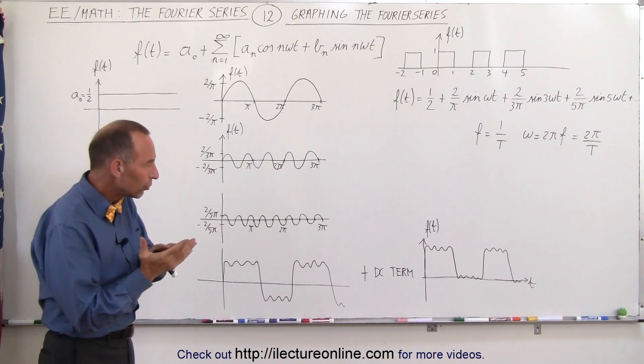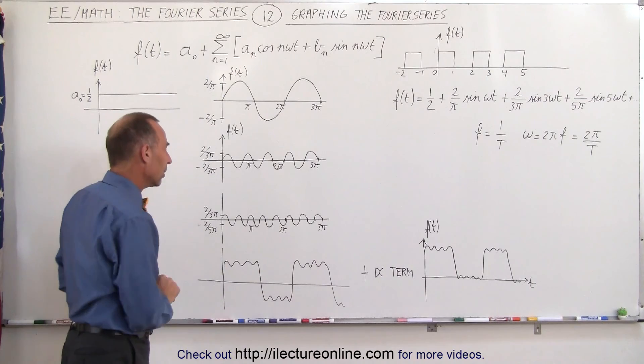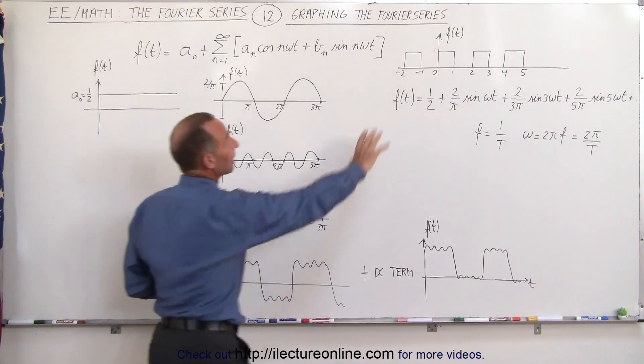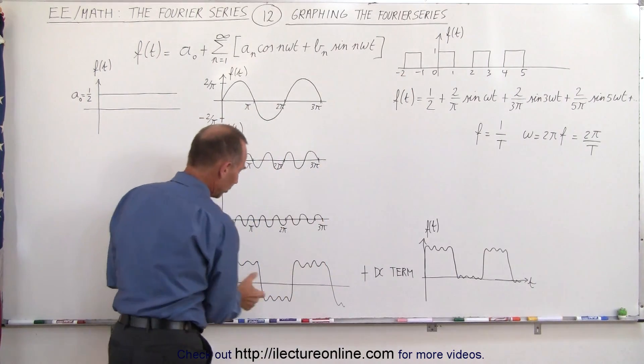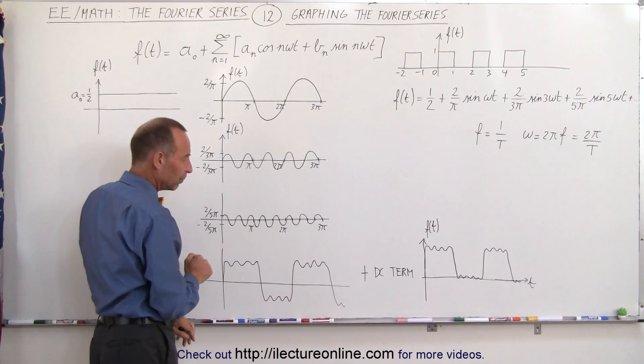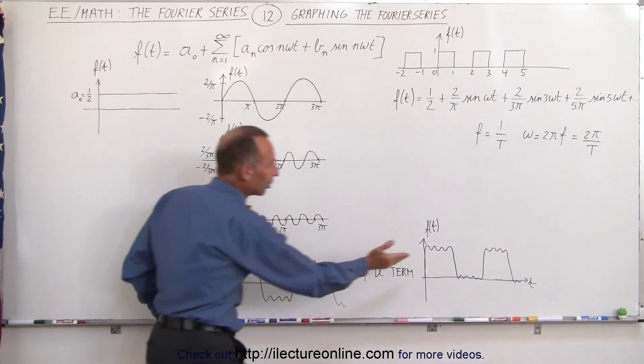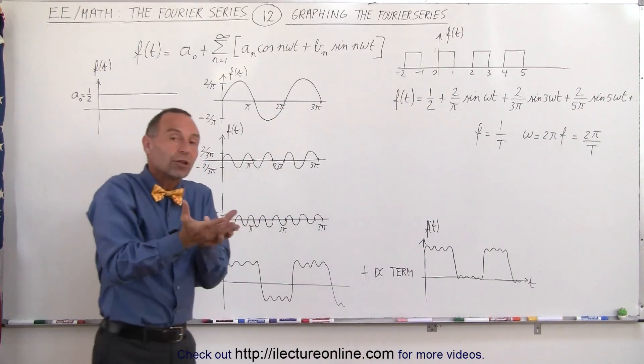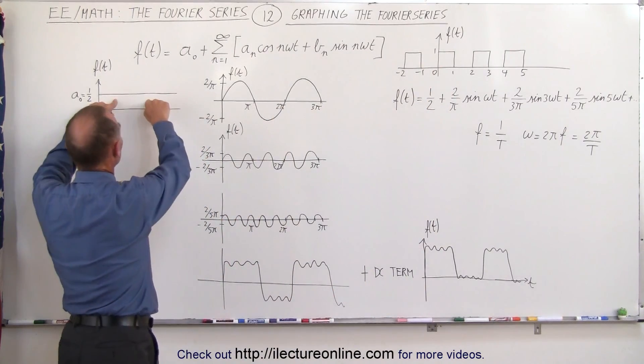When you add all those together on a single graph this is what you would end up with. It looks kind of like that but it's been lowered, in other words the height here is the same as the height there in the negative direction and so for us to get something that looks kind of like the original function we have to boost it up and that's what the DC term is for.